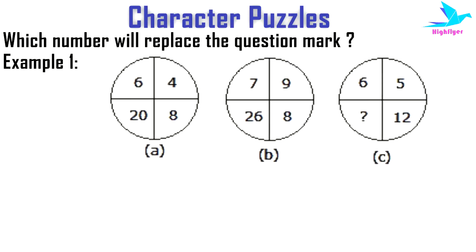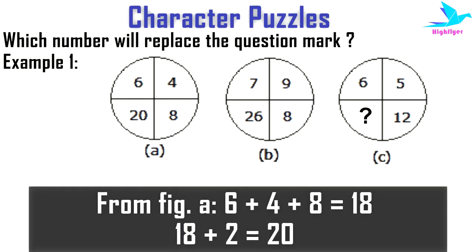In example one, we can see some figures and a question mark in the third figure. If we look at figure one, we can see 6 + 4 + 8 = 18, and 18 + 2 = 20. So the relation between the four numbers inside the circle is: if we add the summation of all three numbers with 2, we get the fourth number.